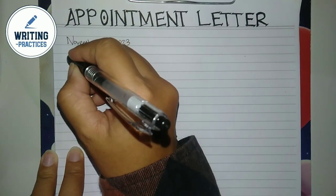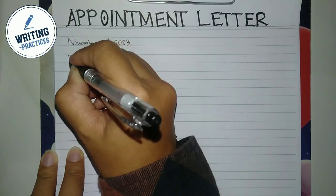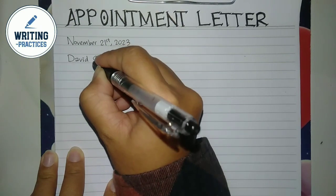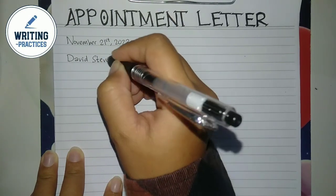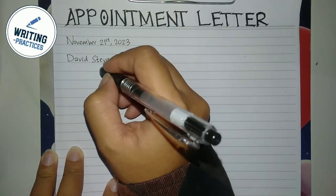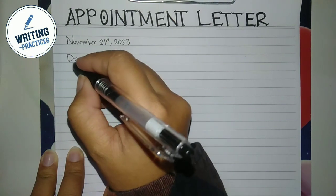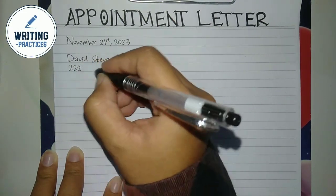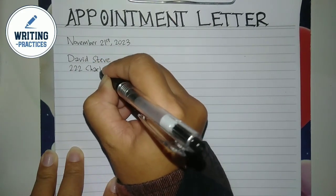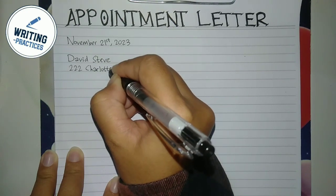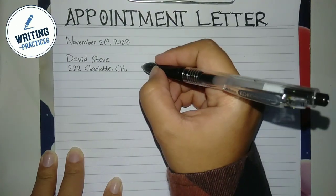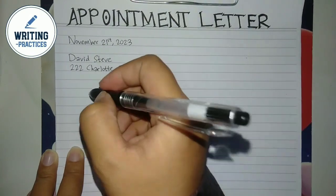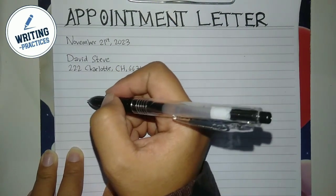Writing Practices will show you how to write an appointment letter step by step. First of all, write the date of the letter — in this case, November 21st, 2023. Then write the full name of the recipient — in this case, David Steve — and write the recipient's address including the city, state, and zip code.